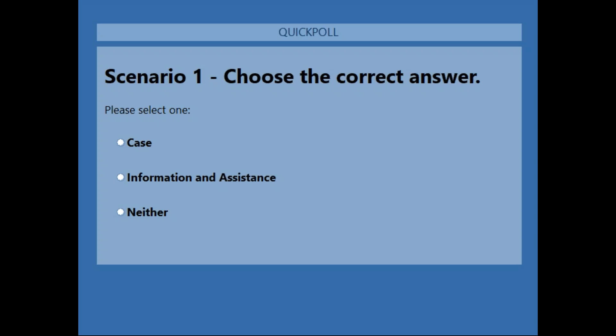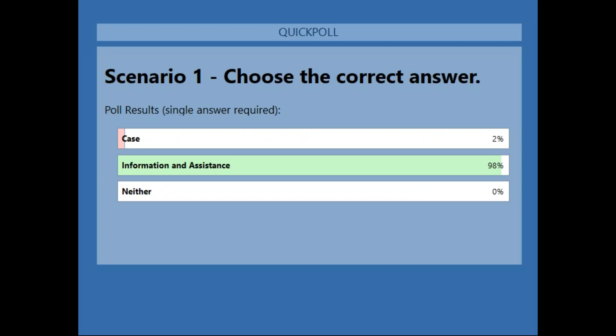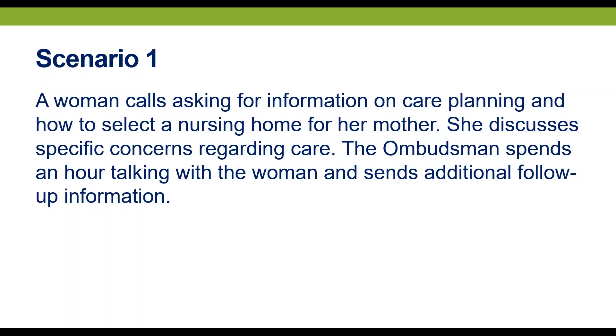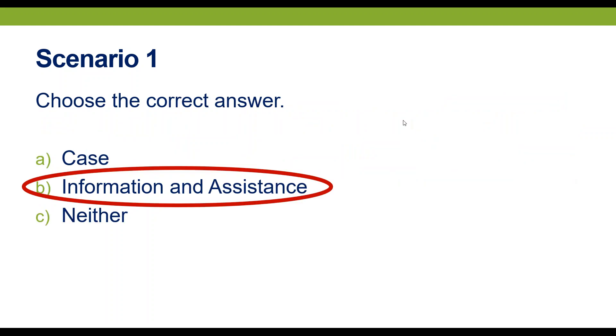Scenario one: A woman calls asking for information on care planning and how to select a nursing home for her mother. She discusses specific concerns regarding the care, and the ombudsman spends an hour talking with her and sends additional follow-up information. The poll result: 2% said case and 98% said information and assistance. The correct answer is B, information and assistance. All requests were educational in nature and requests for additional information. Although the ombudsman spent a lot of time on the call, it did not result in further action — the ombudsman provided information to empower the caller to search for a nursing home.